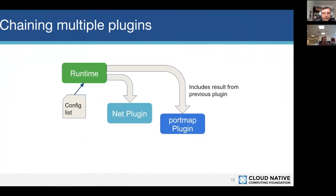Just to show that in pictorial terms — when we chain plugins, the configuration is a list, not just one. Each successive plugin gets the result from the one before, which can be important if they want to do some specific configuration on that. You might notice that this is kind of a generalization of what we did with IPAM earlier, which is true. Maybe if we'd had this idea, we would never have done the embedded IPAM syntax in the first place, but it's there and it'll stay there.